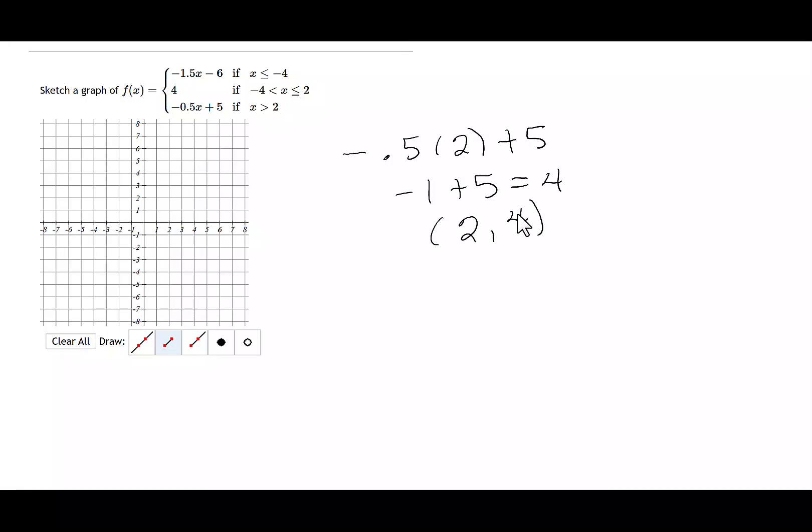After that, I need a second point to draw this little section of the graph. So let's pick 4. I have negative 0.5 times 4 plus 5. Negative 0.5 times 4 is a negative 2 plus 5 gives me a positive 3. So my point is 4, 3.